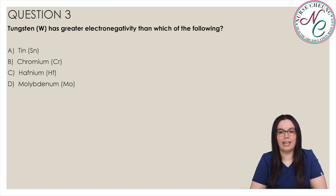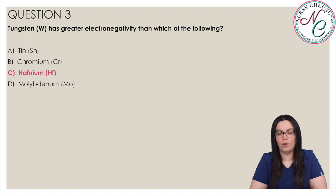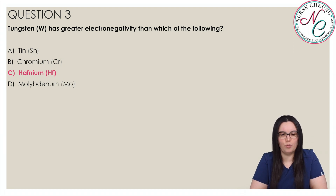Tungsten has greater electronegativity than which of the following? A Tin, B Chromium, C Hafnium, or D Molybdenum? And the correct answer is C Hafnium. Tungsten is located on the sixth row of the periodic table and it has an atomic number of 74. Electronegativity increases as you move from left to right across the period or row of the table and it decreases as you move down a group or column. Hafnium is located to the left of Tungsten on the sixth row so it has a lower electronegativity value.